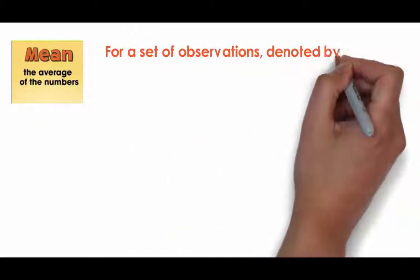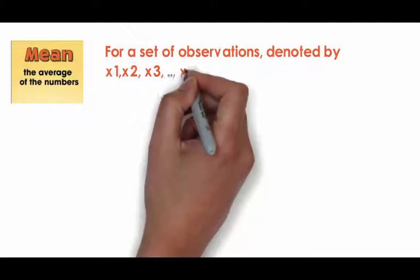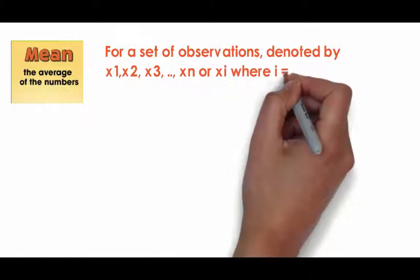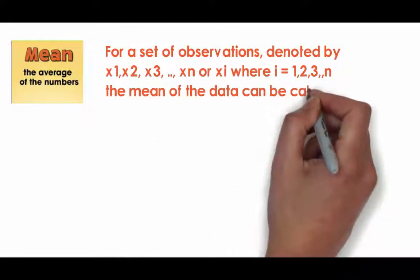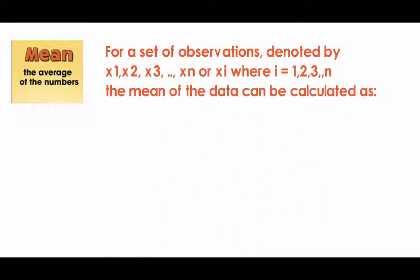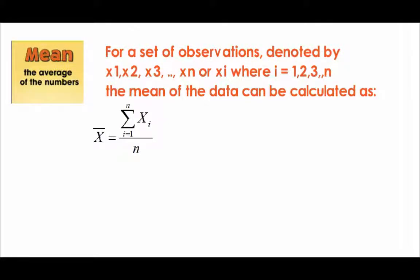For a set of observations denoted by x1, x2, x3 till xn or xi where i is equal to 1, 2, 3 and so on till n, the mean of the data set can be calculated as x bar, which is the mean, is equal to summation xi where i goes from 1 to n divided by n.